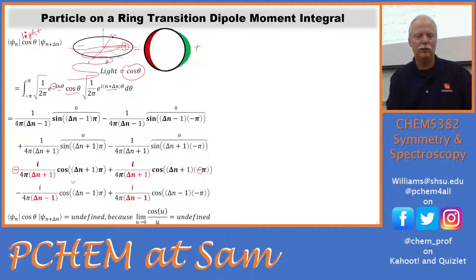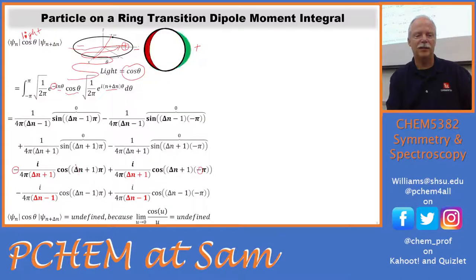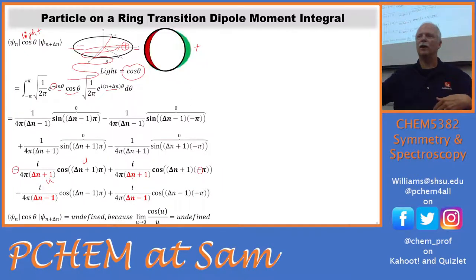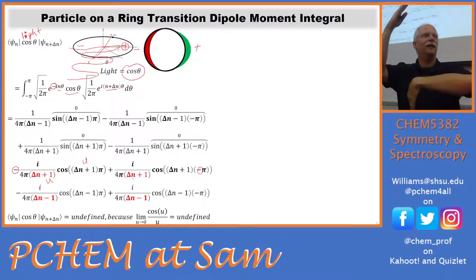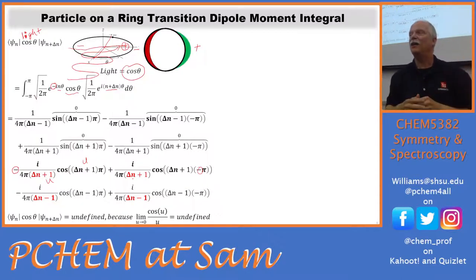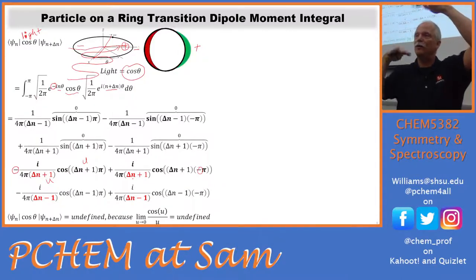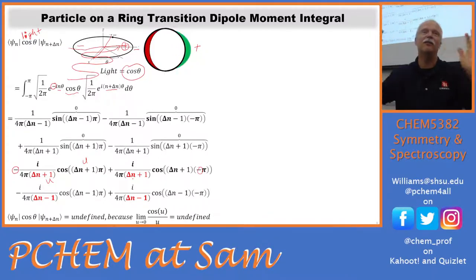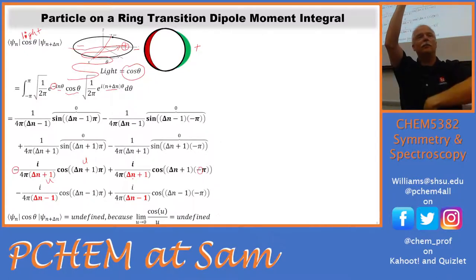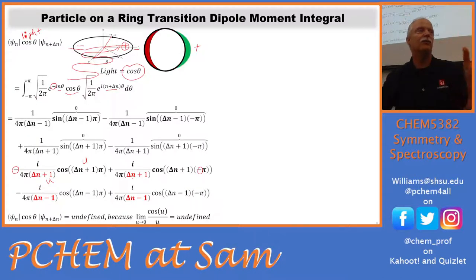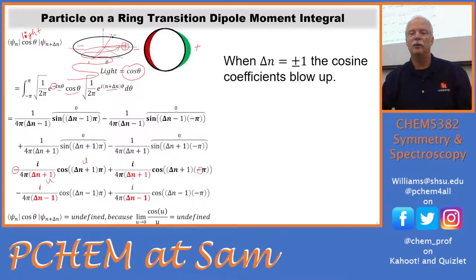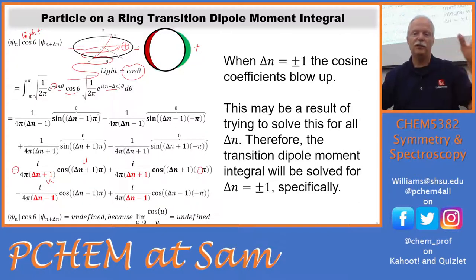In the result, there are special cases: this blows up when Δn = ±1. We have essentially cosine(u)/u, which goes to positive infinity approaching from the positive direction and minus infinity from the negative direction — so that limit is undefined. We can't use L'Hôpital's rule here as we could for sine(u)/u → 1, because the infinities are in opposite directions. So we have a problem with the general solution when Δn = ±1, and we need to go back and solve specifically for just Δn = ±1.